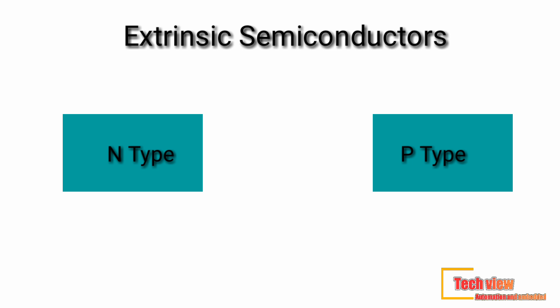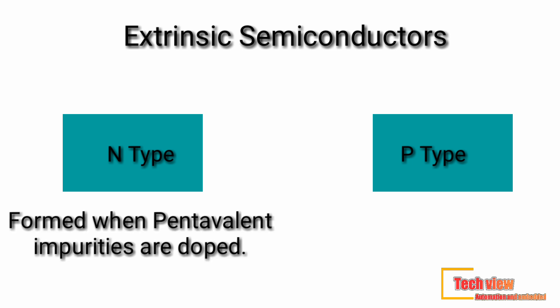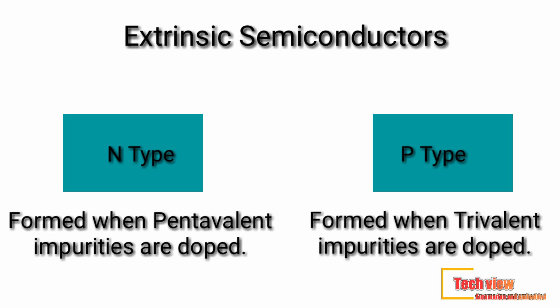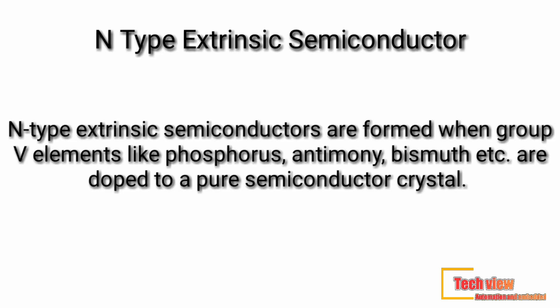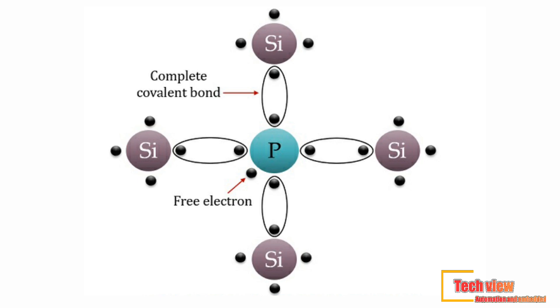The first type is n-type and the second is p-type. N-type extrinsic semiconductors are formed when pentavalent impurities are doped, and p-type extrinsic semiconductors are formed when trivalent impurities are doped. N-type extrinsic semiconductors are formed when group 5 elements like phosphorus, antimony, or bismuth are doped into a pure semiconductor crystal.